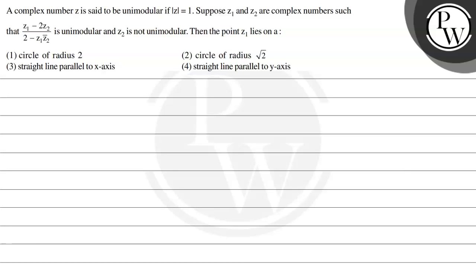Let's read the question. A complex number z is said to be unimodular if mod of z is equal to 1. Suppose z1 and z2 are complex numbers such that z1 minus twice of z2 divided by 2 minus z1 times z2 conjugate is unimodular, and z2 is not unimodular. Then the point z1 lies on: option 1 - circle of radius 2, option 2 - circle of radius root 2, option 3 - straight line parallel to x-axis, or option 4 - straight line parallel to y-axis.